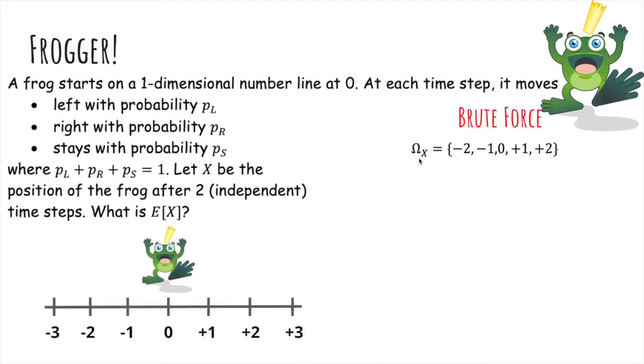So by brute force, the range of x is negative 2 to 2. That's the possible places the frog can end up. And now let's try to find the probability mass function. So the probability we end up at negative 2 is PL squared, because the steps are independent, and the only way to get to negative 2 is to go left twice.